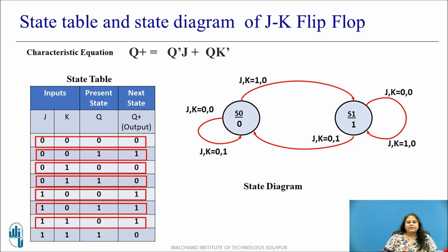Now consider the combination where present state is 0 and J equals K equals 1. The next state becomes 1, so state transition takes place. Finally, when present state is 1 and J equals K equals 1, the next state value is 0 — again state transition takes place.